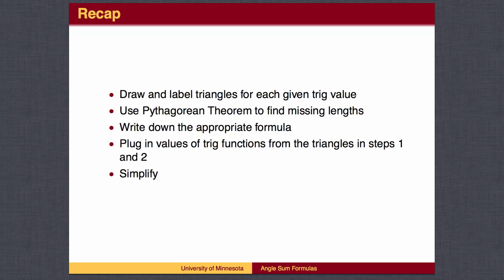To recap: in most cases, you'll be given the value of a single trig function for two different angles and be asked to find the value of a trig function with the angles added or subtracted. To do so, draw and label a triangle for both of the original angles, find missing lengths by the Pythagorean theorem, then use the appropriate formula, plug in the values by reading them off the triangles, and simplify.